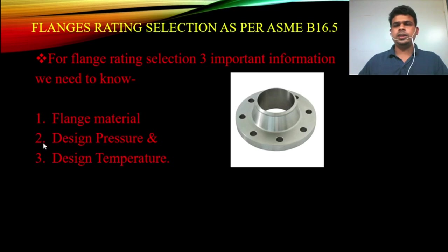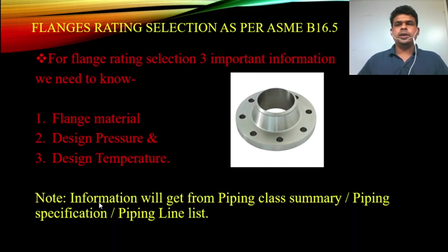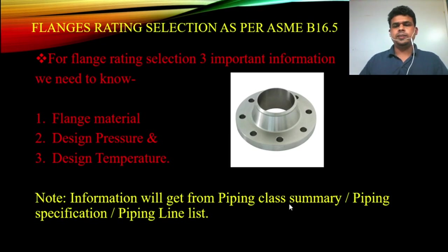Another question is where we get this information. This information we get from the piping class summary, piping specification, or piping line list. When working on a project, you need to collect all these documents first. From the piping line list you can find the piping spec, pressure, and temperature. If you work on a repair project and want to change an existing flange, you also need to collect this information before choosing the new flange.